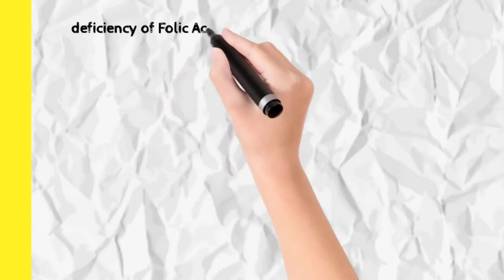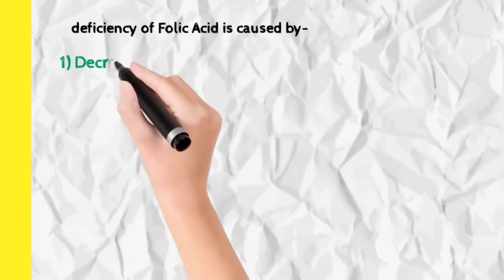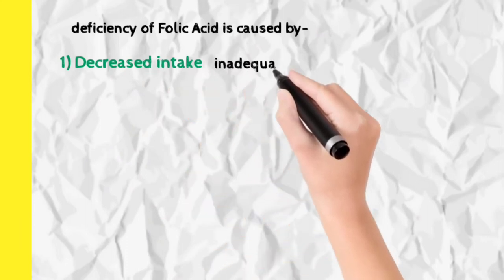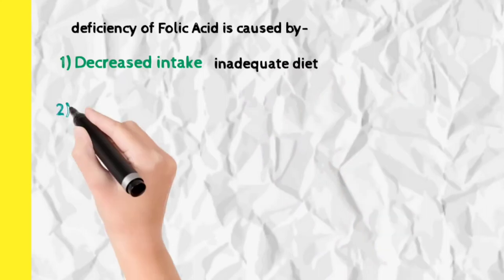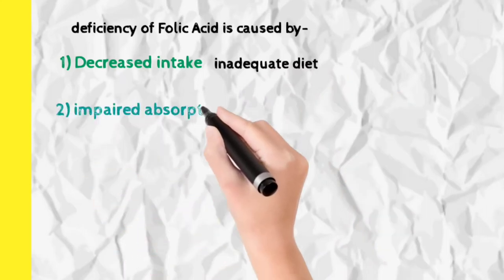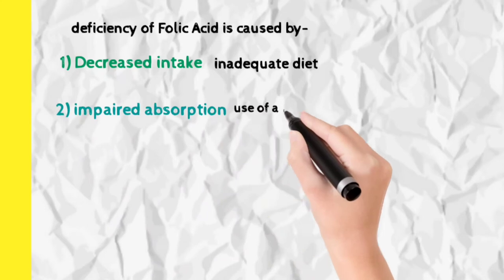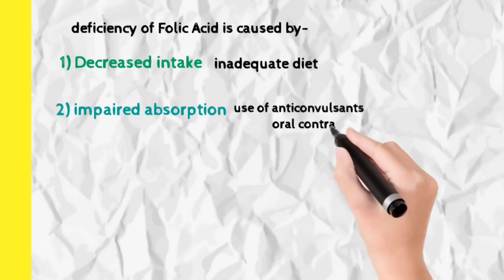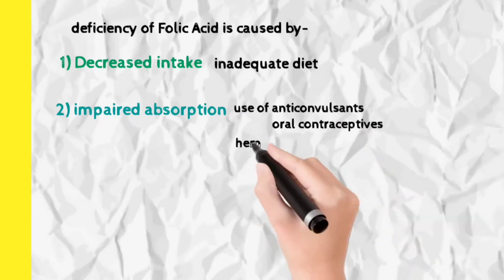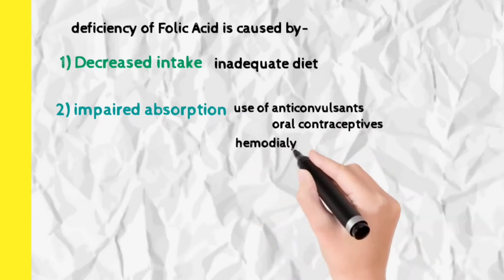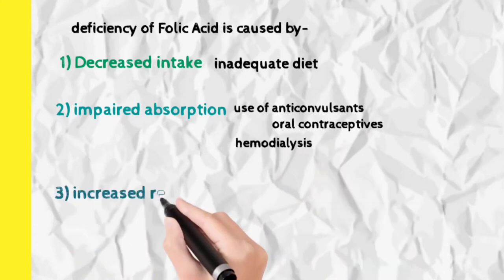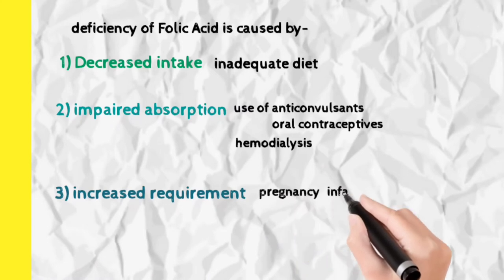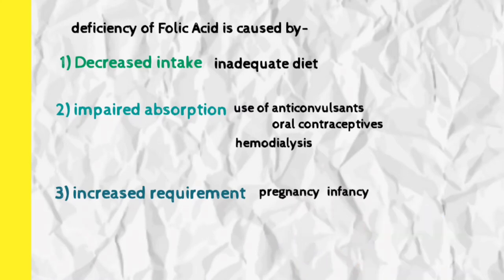Now let us see the causes of folic acid deficiency. Just like vitamin B12, it is also of three types. Decreased intake is because of inadequate diet — youngsters eat a lot of junk food, and old people cannot chew food. Impaired absorption is basically because of drugs: females taking oral contraceptives, patients with convulsions taking anti-convulsants, and kidney failure patients undergoing hemodialysis. All three cause folic acid deficiency. Increased requirement is again in pregnancy and infancy.